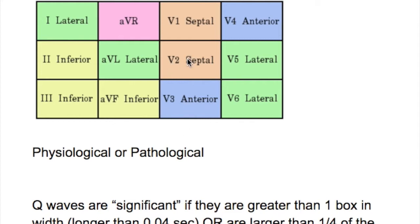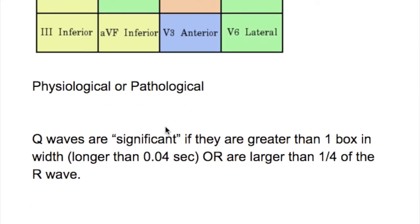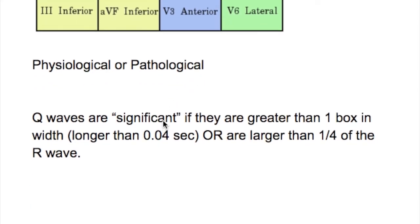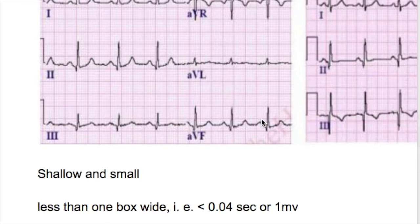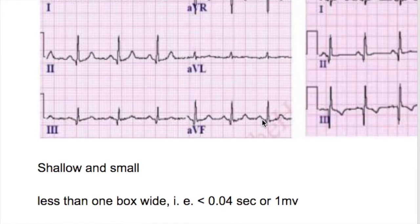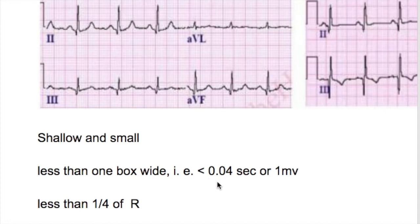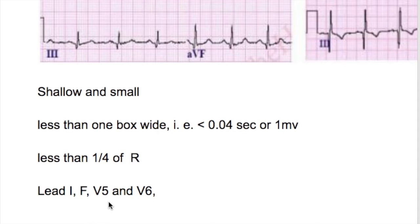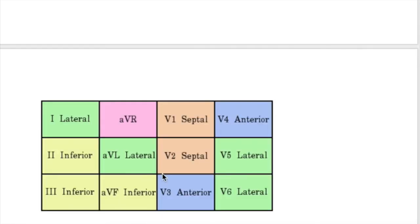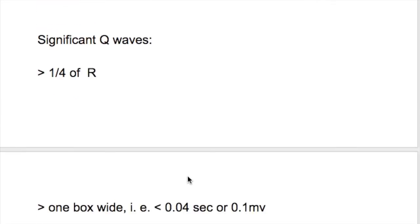Presence of Q waves in chest leads V2 and V3 is abnormal. Q waves may be physiological or pathological. A normal physiological Q wave is shallow, less than one box wide (less than 0.04 seconds or 40 milliseconds), less than one quarter the height of the R wave, and is present in leads I, aVF, V5, and V6.